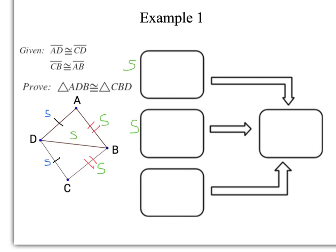You have to make sure that you have side, side, side in your flowchart as your final reason. With most of these proofs, you can do them in any order that you want. I'm going to start with my givens. Most of the time that's the easiest. So AD congruent to CD, given. CB congruent to AB, given.